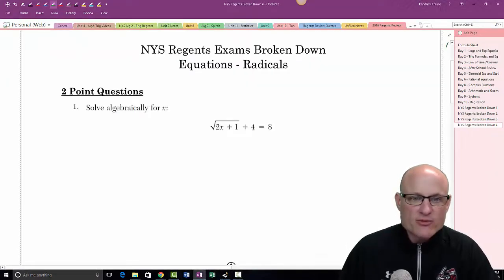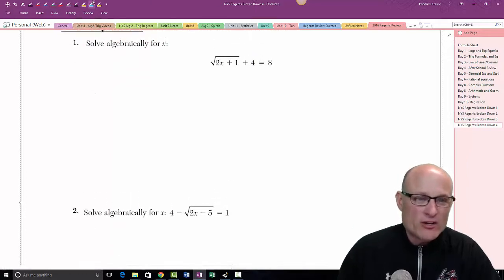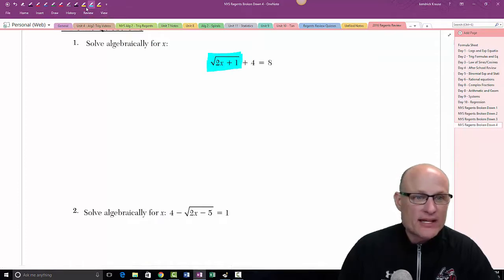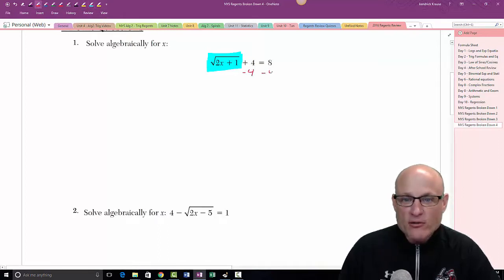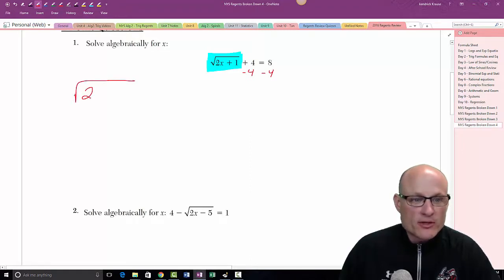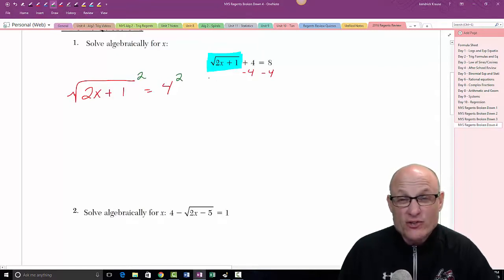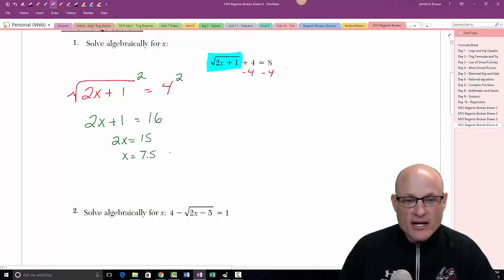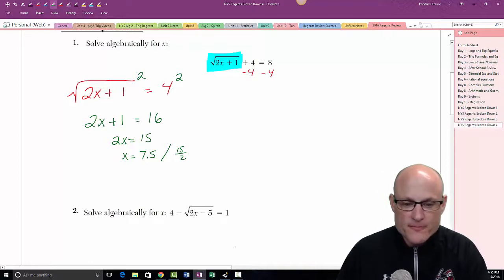The trick with solving radical equations is to first isolate the weird thing. In this case, this is the weird thing, so we want to get that all by itself. We subtract 4 and bring it over. What I end up with is the square root of 2x plus 1 equals 4. Now to get rid of that radical, I'm going to square both sides. When you square things, you introduce extraneous roots, so all radical equations must be checked. 2x plus 1 equals 16. I subtract 1, I get 2x equals 15, so x equals 7.5 or 15 over 2.